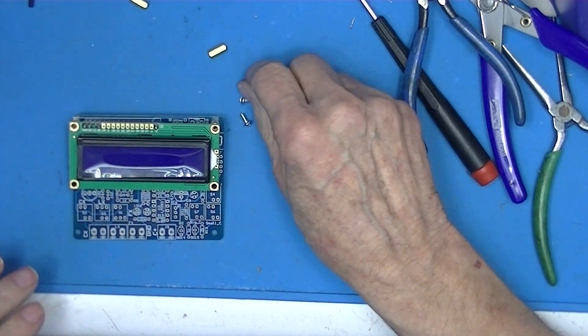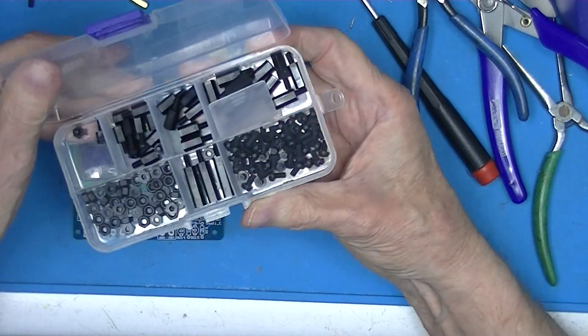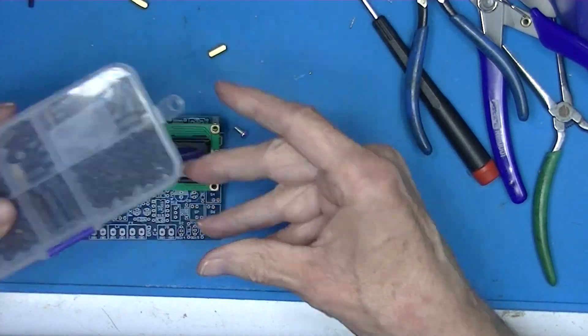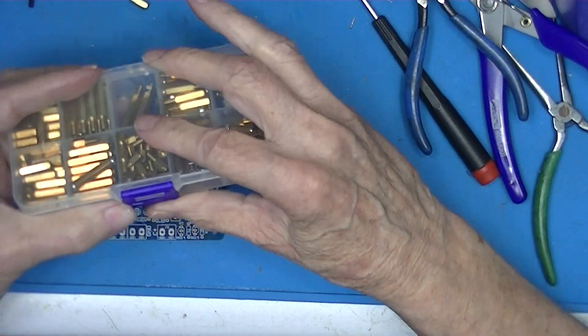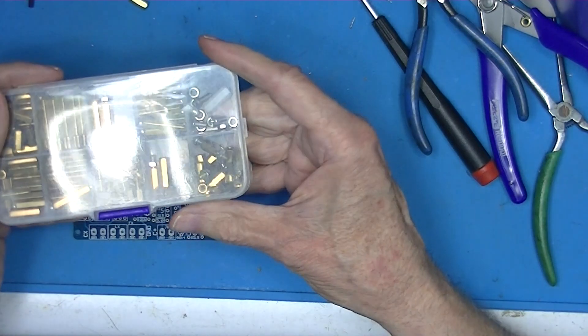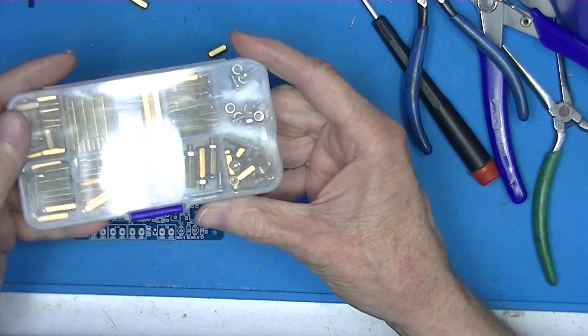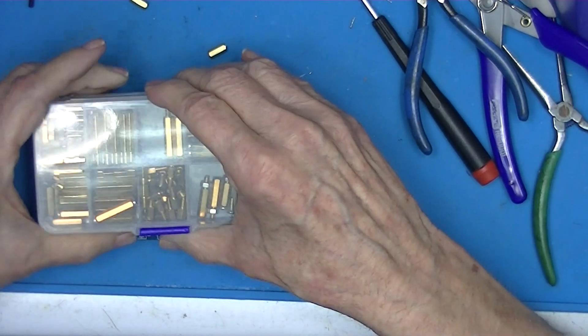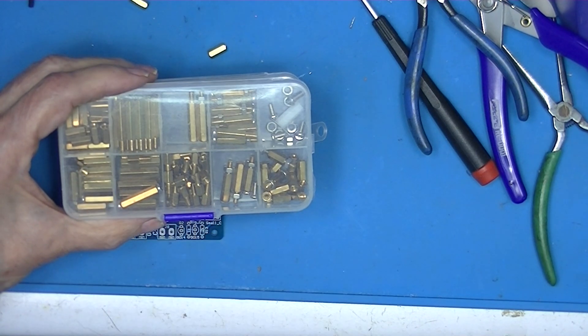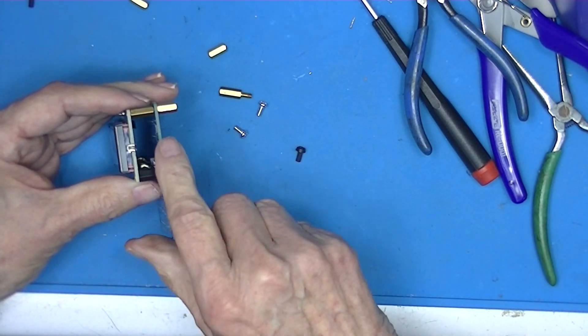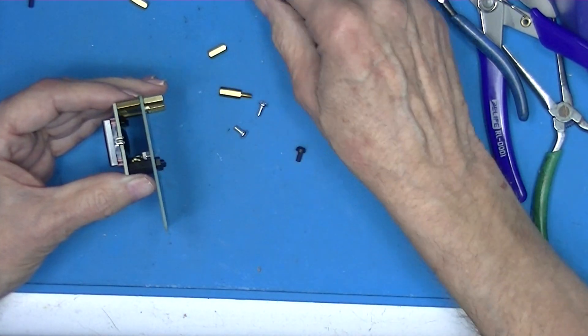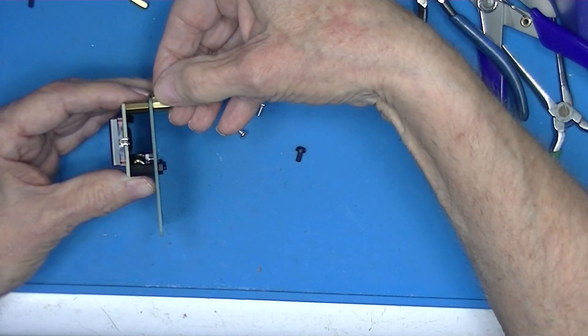You can get these standoffs in kits. eBay, AliExpress. This is a nylon standoff kit. This is a brass standoff kit. They're M3, M3 brass standoffs. Either kit contains male by female or male by male. This could be a male by male, but this needs to be a male by female in order to use the spacers that came with the kit as legs.